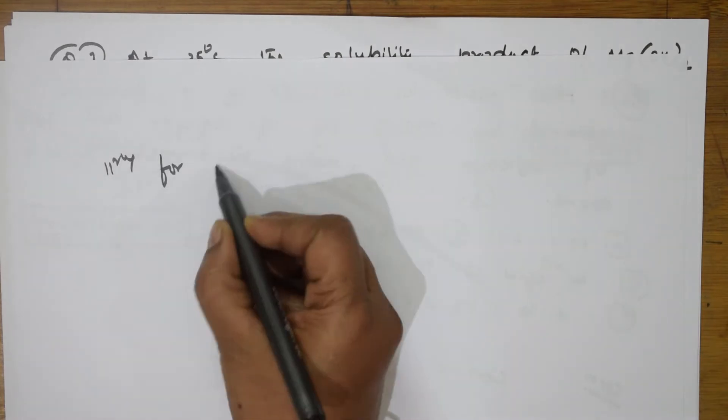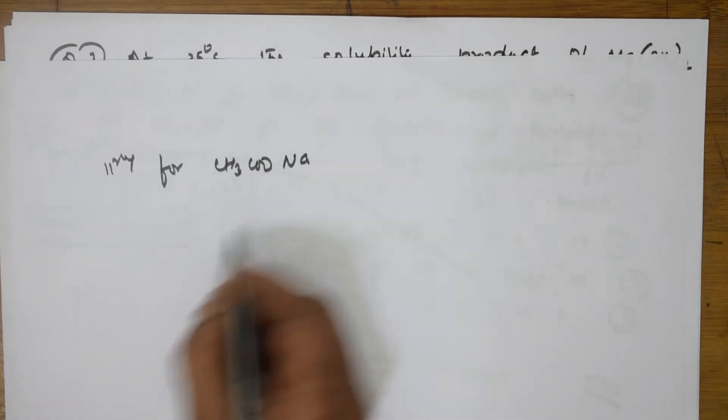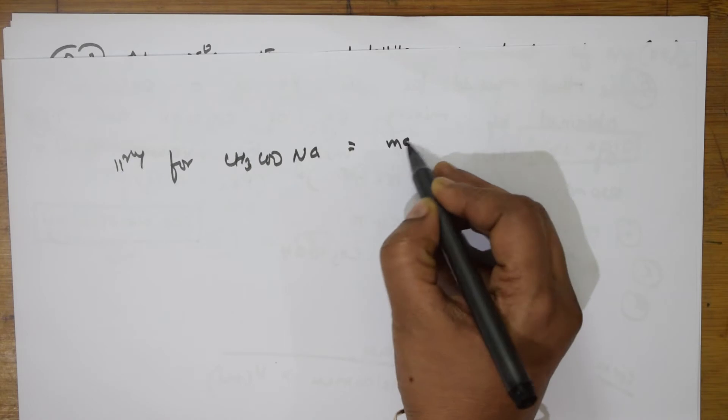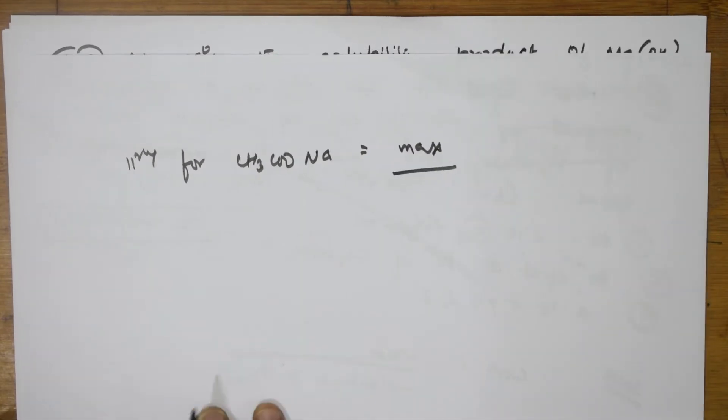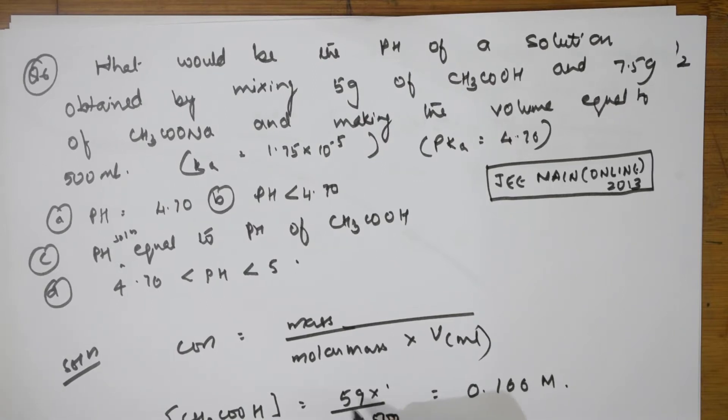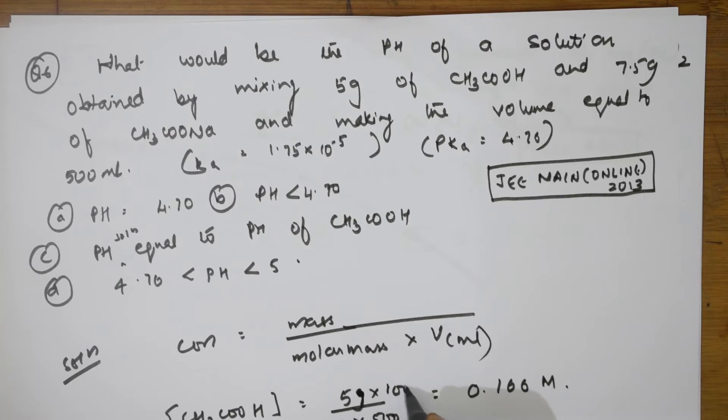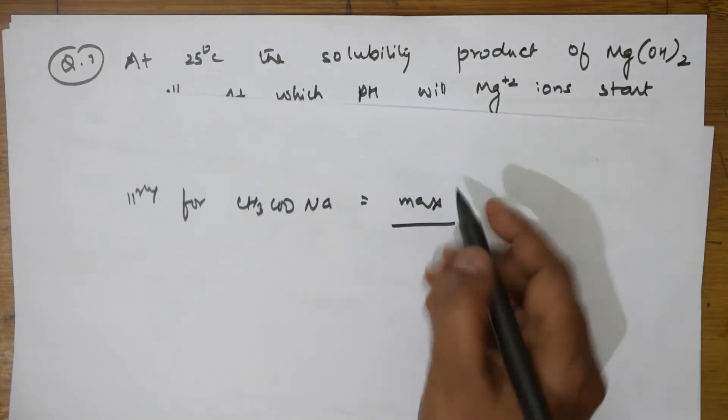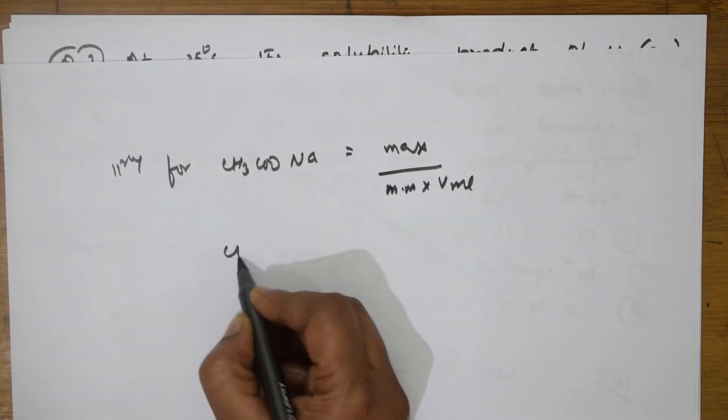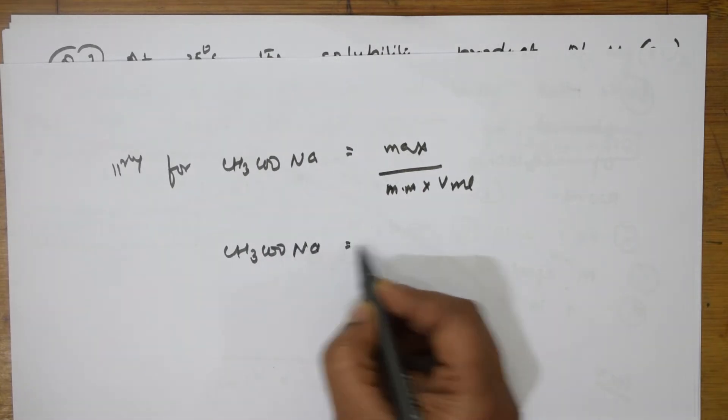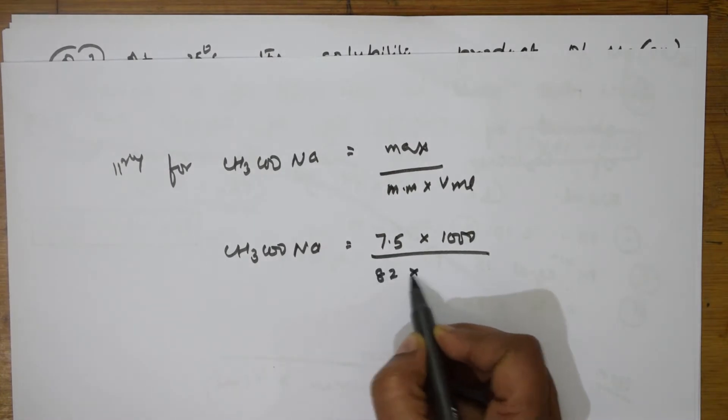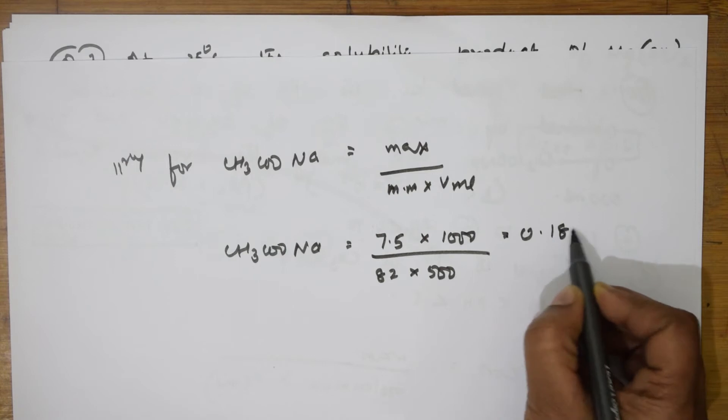So similarly for sodium acetate, again the same thing, mass by molar mass into volume in ml. We didn't multiply by 1000, I need to multiply by 1000, isn't it? 5 grams into 1000. CH3COONa, how much is the mass? Given 7.5 into 1000 divided by molar mass is 82 into 500. Now, I get an answer 0.183 molar.